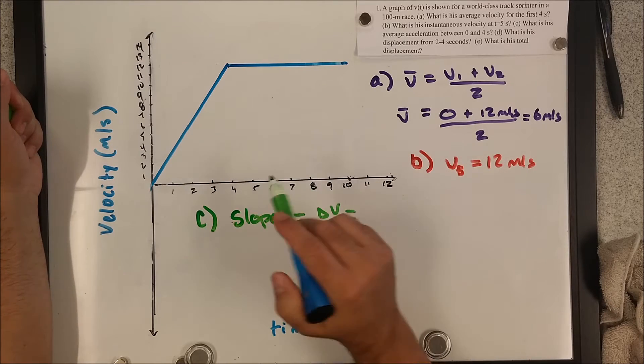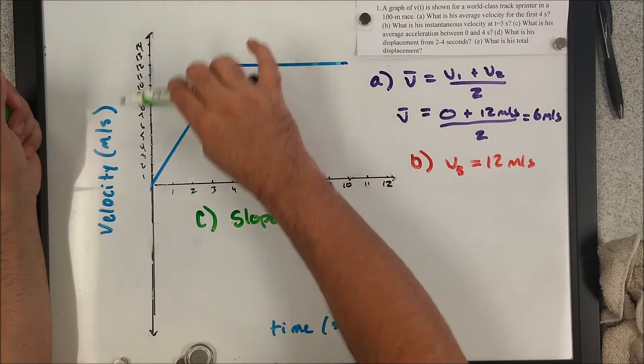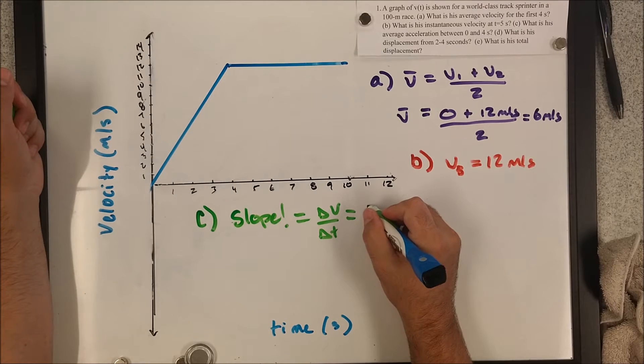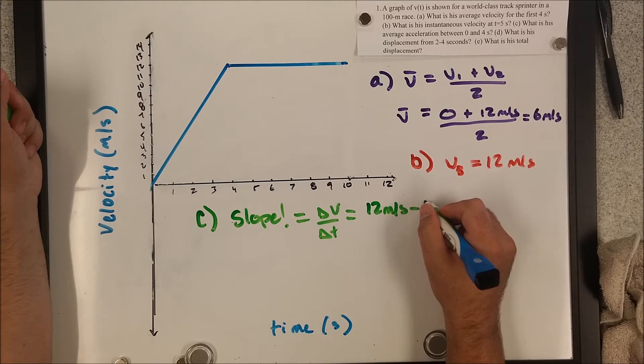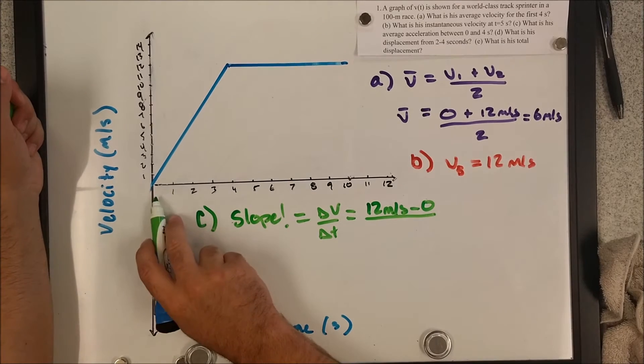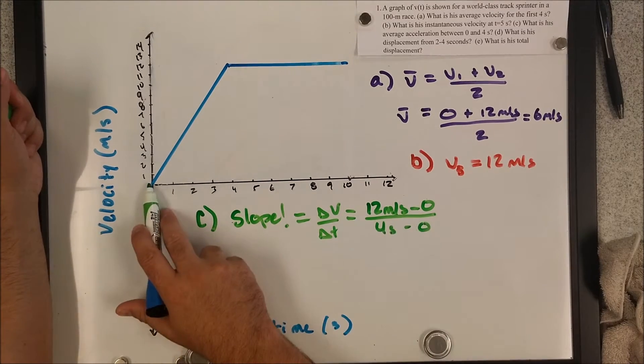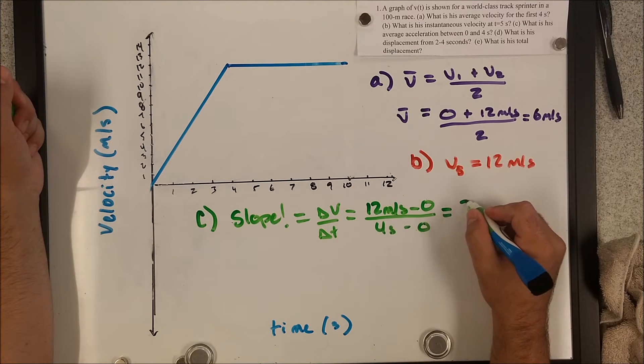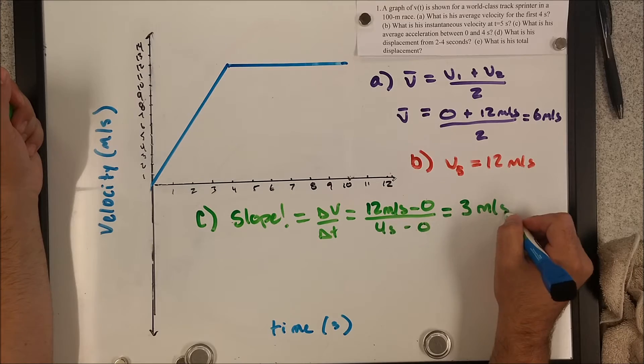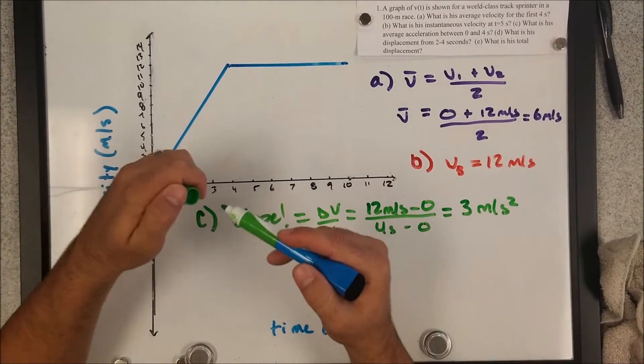So C is a fancy way of saying what is the slope of the graph because change of velocity over change in time is acceleration. So it'll be change in V over change in T. We know the change in V from zero to four seconds. It's going to be from zero to 12 meters per second. So 12 meters per second minus zero all over that change in time, which will be four seconds minus zero. So we're looking at 12 divided by four. We're going to get three meters per second squared for my acceleration between zero and four seconds.